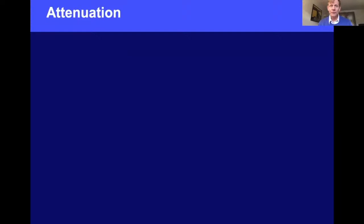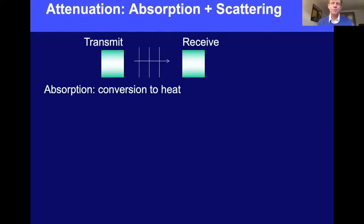So first, let's go on to attenuation. If you have an ultrasound wave generated with a transmitter — say a plane wave as discussed in the first part — as that wave travels through tissue it won't change in amplitude, and if we picked it up with a receiver we'd get all of the energy. But in reality, as that wave passes through, some of that energy is lost.